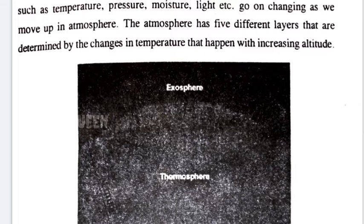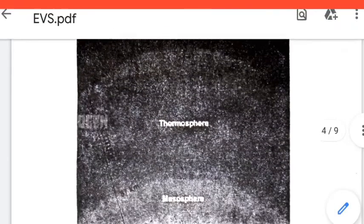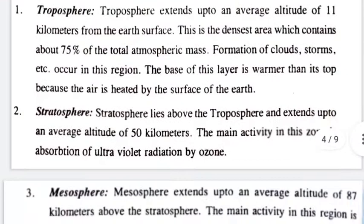The atmosphere has five different layers that are determined by the changes in temperature that happen with increasing altitude. We are talking about temperature changes with altitude increase.